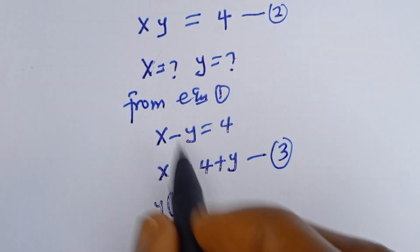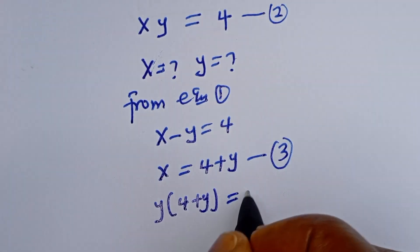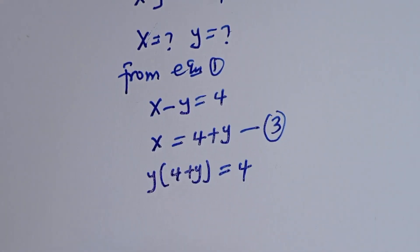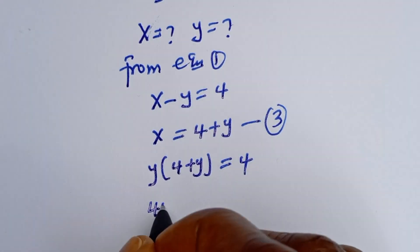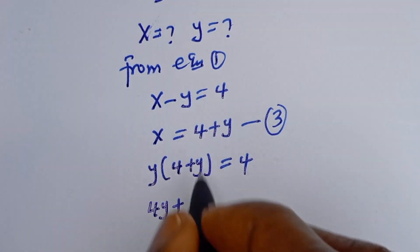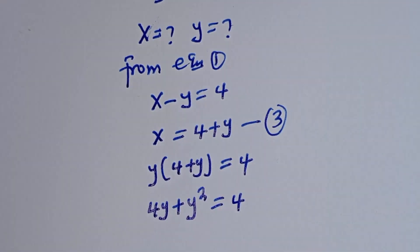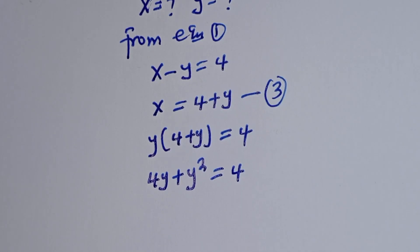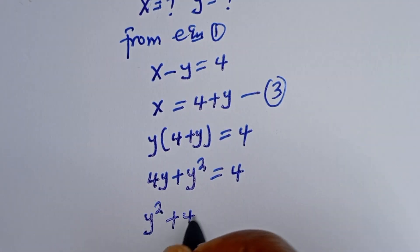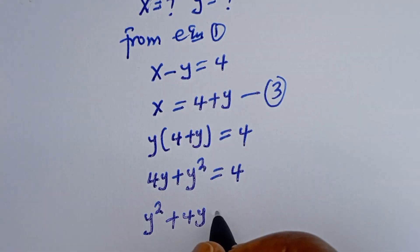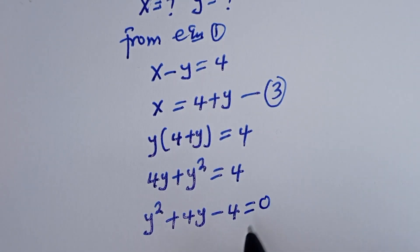We can now substitute equation 3 into equation 2. That is Y times bracket 4 plus Y is equal to 4. Then Y times 4 — that is 4Y — plus Y times Y — Y squared — is equal to 4. So Y squared plus 4Y minus 4 is equal to 0.